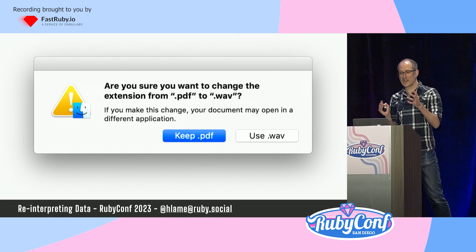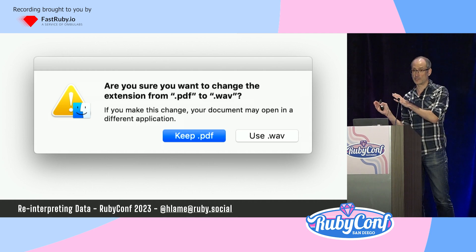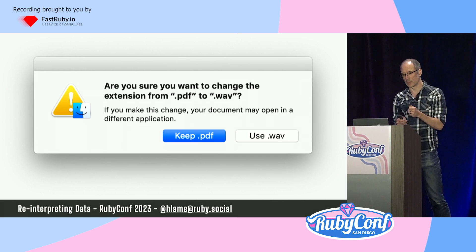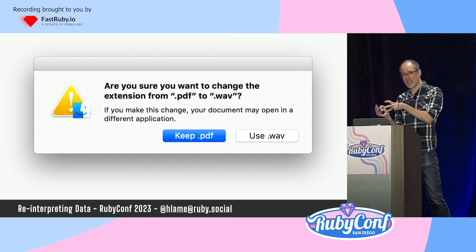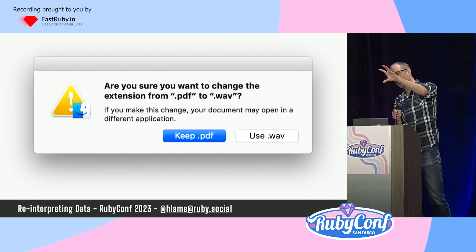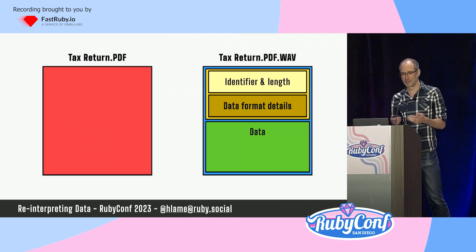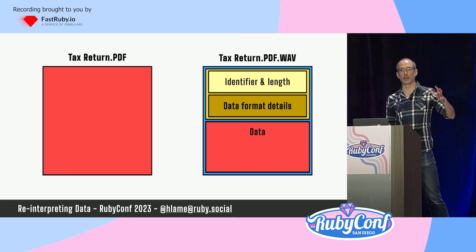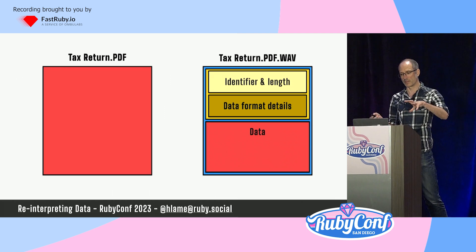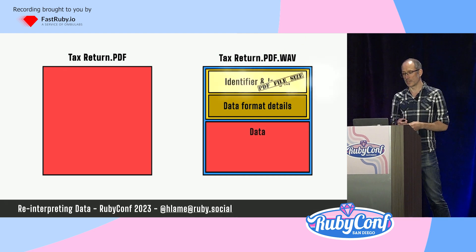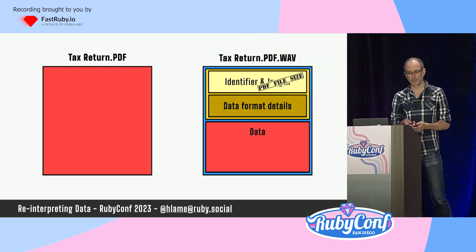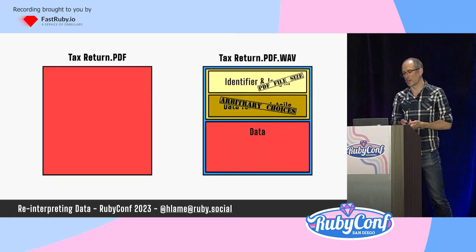We can't rename a file from taxreturn.pdf to taxreturn.wav and expect to listen to it. But given how simple the WAV file format is, we could take a PDF file, put a WAV file header on top of it, and then we can listen to it. A WAV file is header and data — the data bit's easy: we just take the entire contents of the PDF and put it at the bottom of our WAV file. We can calculate the header just by looking at the size of our source file.